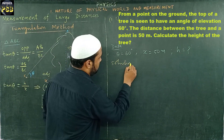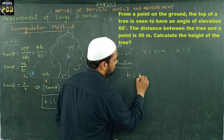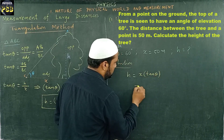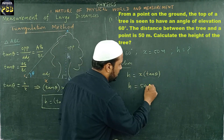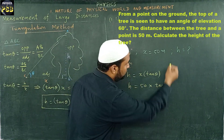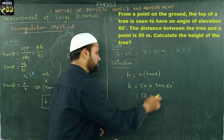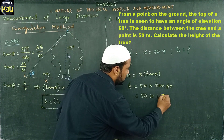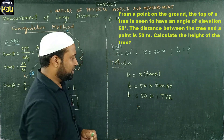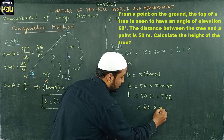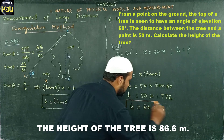Solution: H equals x multiplied by tan(theta). Here x is 50 meters and theta is 60 degrees, so H equals 50 multiplied by tan(60°). The value of tan(60°) is 1.732. On multiplication, we get the value of H equal to 86.6 meters. The height of the tree is 86.6 meters.